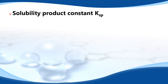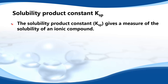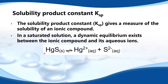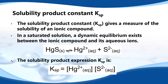Next we look at the solubility product constant, the Ksp. The solubility product constant gives a measure of the solubility of an ionic compound. In a saturated solution, a dynamic equilibrium exists between the ionic compound and its aqueous ions. For example, in a saturated solution there is a dynamic equilibrium between sparingly soluble mercury sulfide and the mercury ions and sulfide ions. The solubility product expression Ksp equals the concentration of the mercury ions multiplied by the concentration of the sulfide ions.